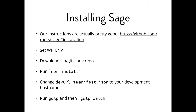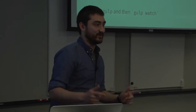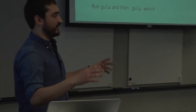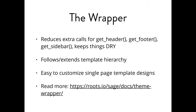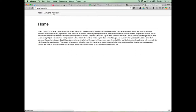I'm not actually going to install Sage today, but it's really easy — these steps are on our installation page. One thing to remember is you need to change the dev URL in the manifest file to get BrowserSync working, which is what I'm going to show you next. It might be the only thing you're really excited about from this whole talk. Here's a basic WordPress site with Roots installed, nothing changed — this is what it looks like when you install your theme.